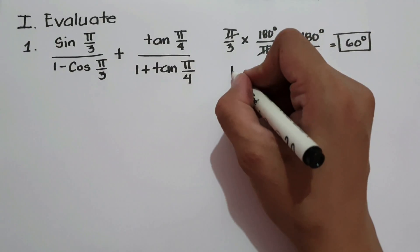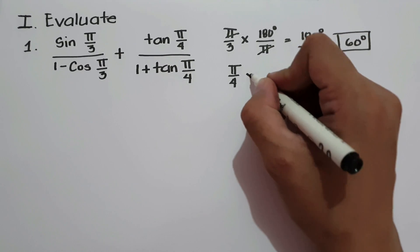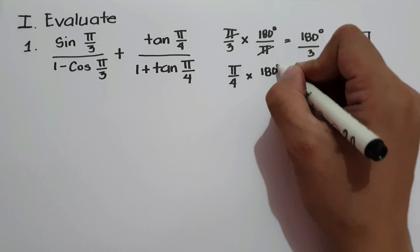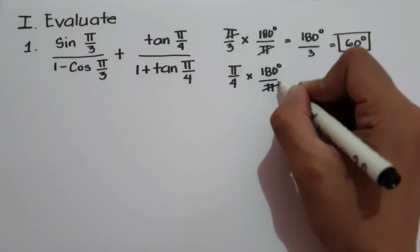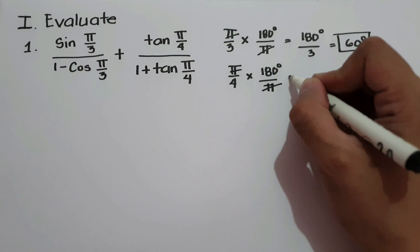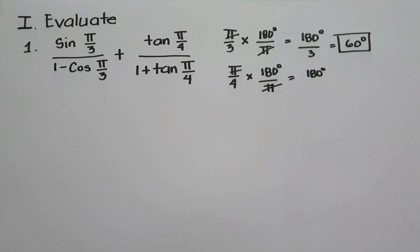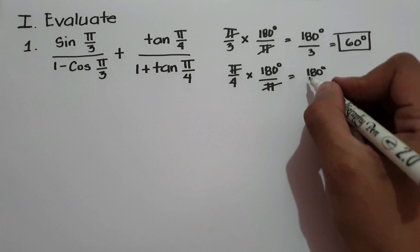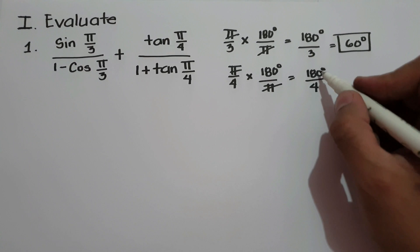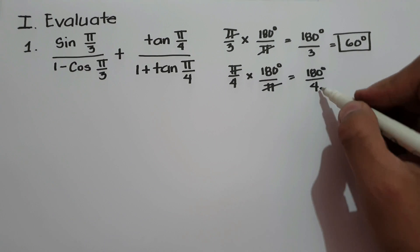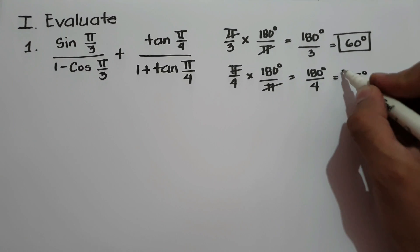What about π/4? So let's multiply by 180 over π. Let us cancel π and we have 180 over 4. 180 degrees divided by 4, that's 45 degrees.